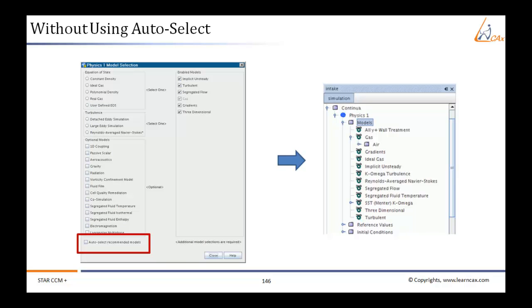To select the turbulence modeling approach without using auto-select, first select the viscous regime. Then in the turbulence group box, select the radio button corresponding to the appropriate turbulence method. Depending on your selection, you will now be able to select a RANS turbulence model, a subgrid scale model for Large Eddy Simulations or LES, or a turbulence model for Detached Eddy Simulation. The result for the SST k-omega model is shown.